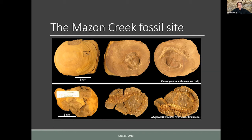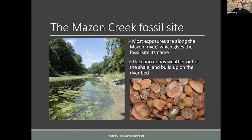Almost all of the fossils at the Maison Creek, and especially the most exciting ones, are inside these concretions and not in the shale itself. When you collect a concretion, it looks like a solid stone. But when you break it open with a hammer or freeze-thawing, you see beautiful fossils inside — on the top is a horseshoe crab, and on the bottom is a millipede. This exceptional soft tissue preservation also makes the fossils much easier to collect.